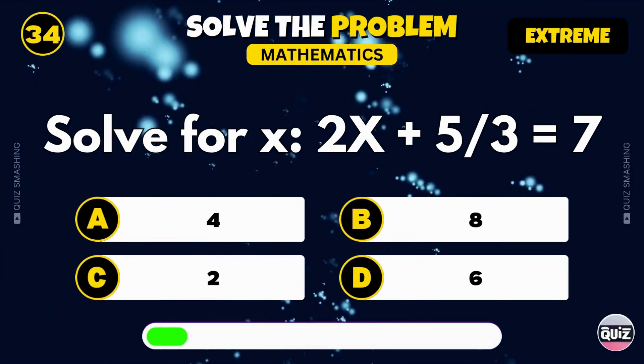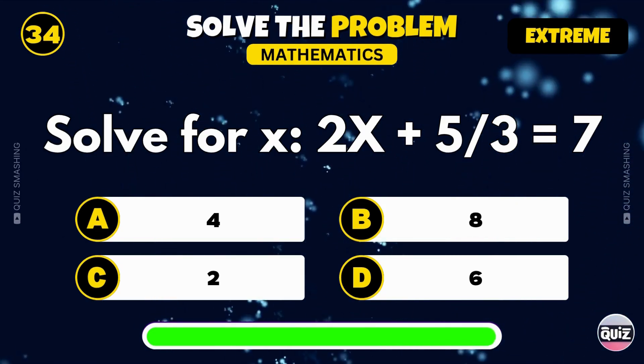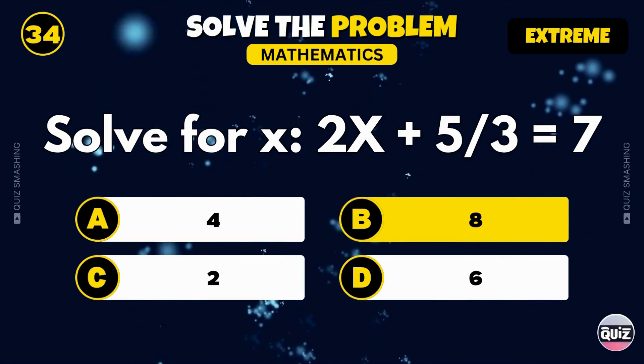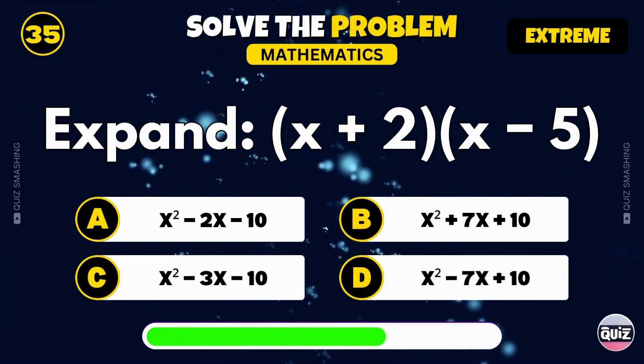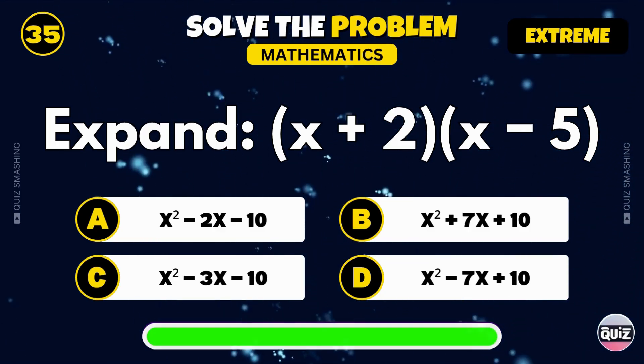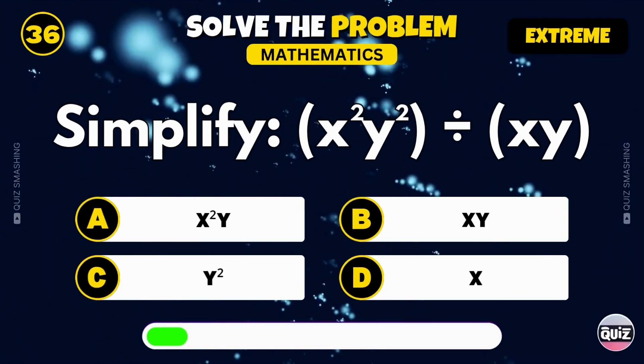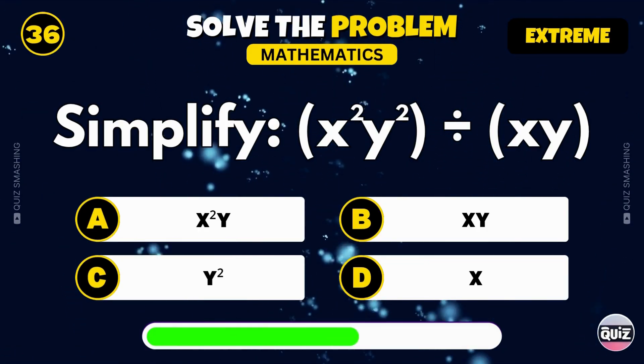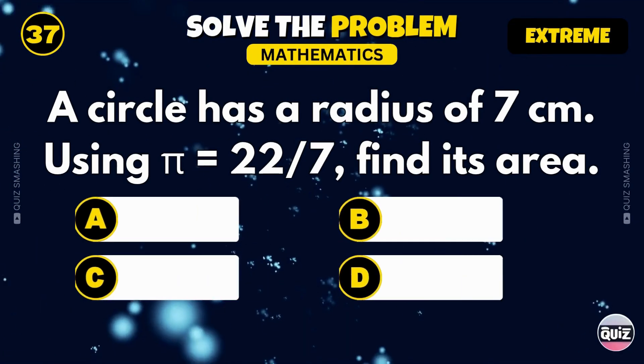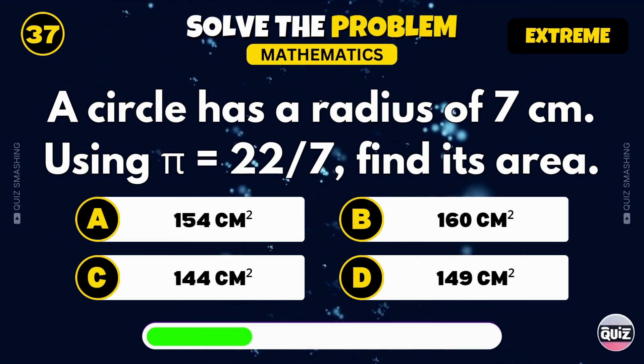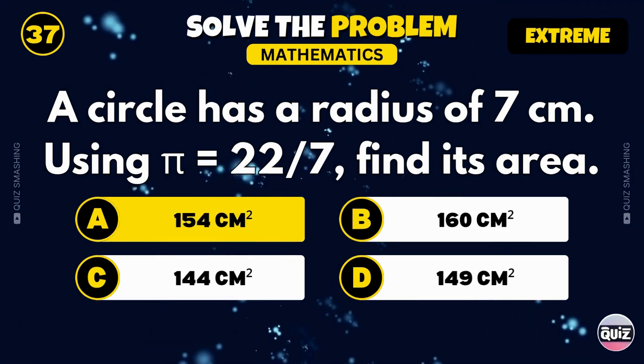Expand the expression open bracket x plus 2 close bracket times open bracket x minus 5 close bracket. It expands to x squared minus 3x minus 10. Simplify open bracket x squared y squared close bracket divided by open bracket xy close bracket. That becomes xy. A circle has a radius of 7 centimeters. Using pi equals 22 over 7, find its area. The area is 154 square centimeters.